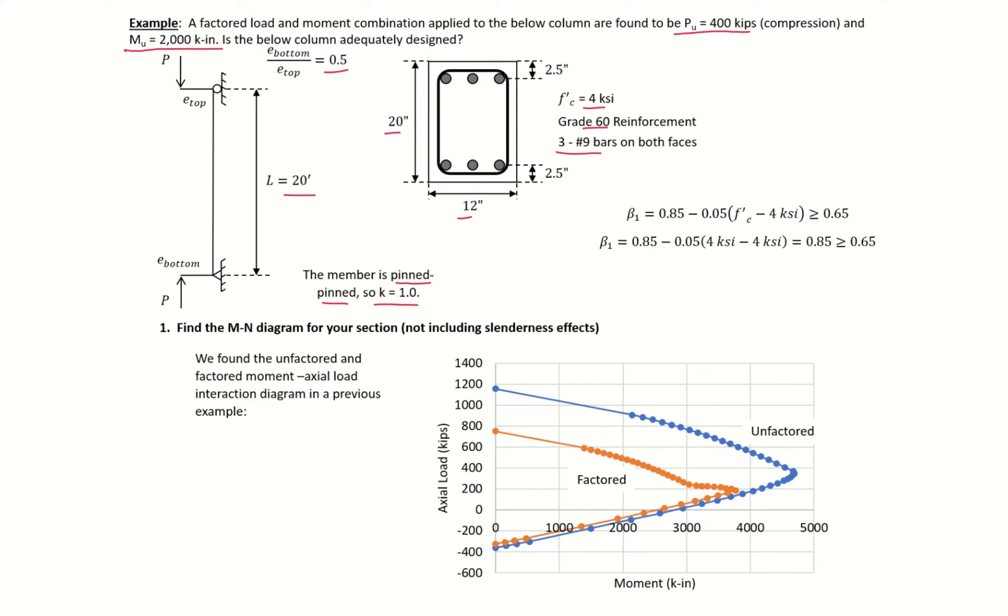The first thing we need to do is find our M-N diagram for the section not including slenderness effects, just finding our short column moment-axial force interaction diagram. We did this in a previous example, so assuming this is given to us where the blue is the unfactored diagram and the orange is the factored diagram.